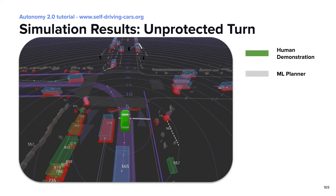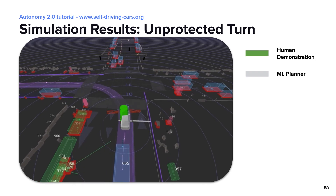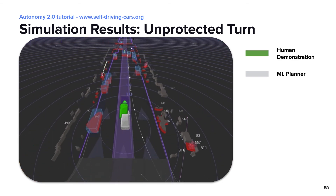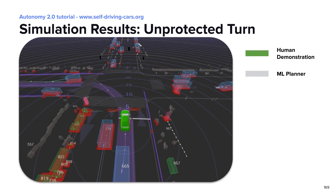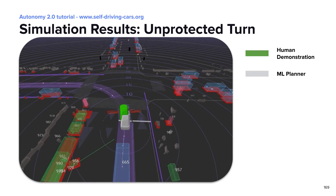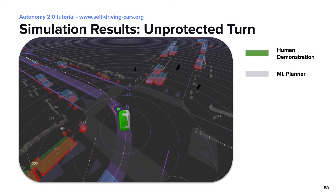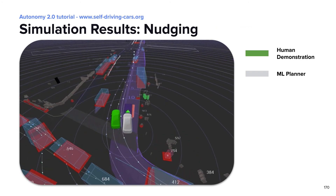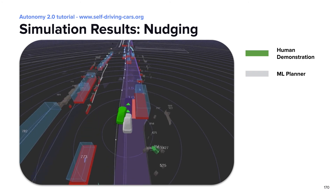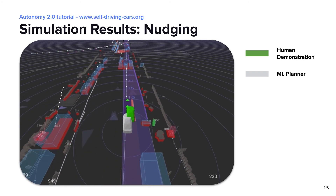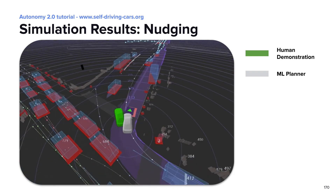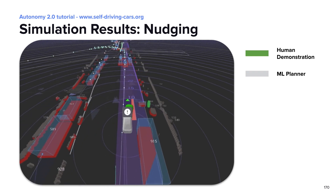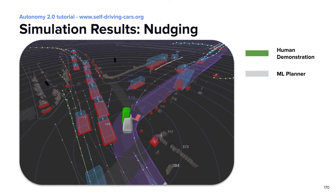After chatting about how the deployment looks, let me show you how the ML planner actually performs. In this video, the green car is the human demonstration and the gray one is the ML planner. This video shows that the ML planner is able to make an unprotected left turn in the simulator, and it performs almost as well as the human demonstration. This next video shows that the ML planner is able to nudge around an agent after making a right turn — a great example of handling very complicated maneuvers without hardcoding any heuristics in the stack.